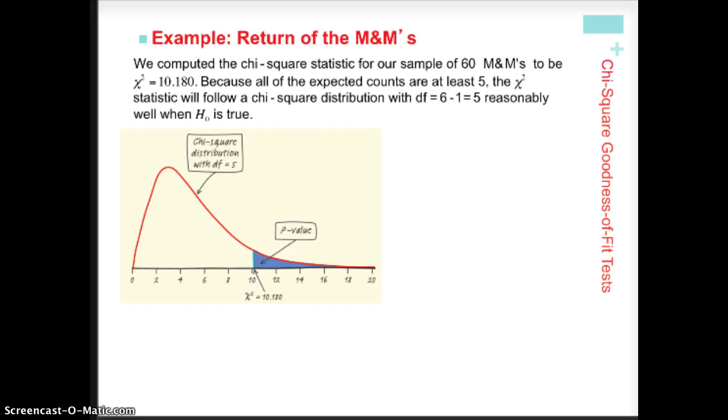Six minus one is five, so we're going to be looking at a curve with five degrees of freedom. And this is the curve with five degrees of freedom. You see our shaded value, which is the shading is the p-value, it's the area under the curve, and the axis value is ten point, I think it was one eight zero, that we came up with.